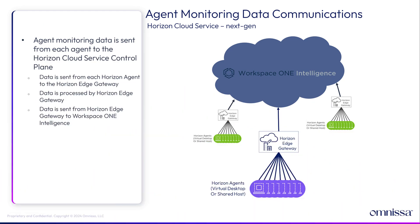Workspace ONE Intelligence gathers its telemetry data from Horizon agents that send the session information via the data path from the Horizon agent through the Horizon Edge gateway appliance. The data is processed by the Horizon Edge gateway and sent to Workspace ONE Intelligence.